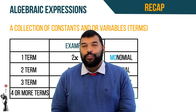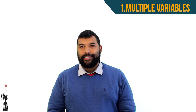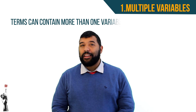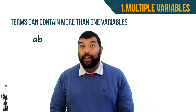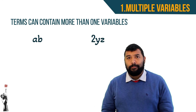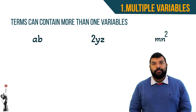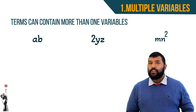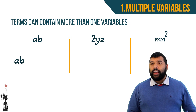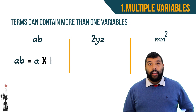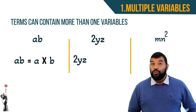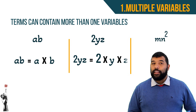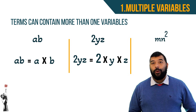Our first topic this week is multiple variables. Terms can contain more than one variable, for example ab, 2xy, or mn squared. Let's look at each one. ab simply means a multiplied by b, and 2yz simply means 2 multiplied by y multiplied by z.